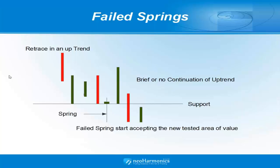One of the things that may help you recognize a spring is what it looks like when it actually fails and the meaning behind it. With that same scenario, we have a retrace in the uptrend and price springs off the support, but in this case we get brief or no continuation of the uptrend. When that happens, combined with price starting to trade down in the area where the spring tested, it establishes a new potential value area — that is a failed spring.